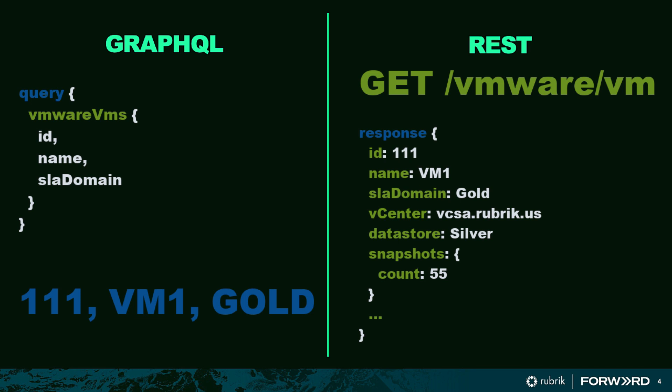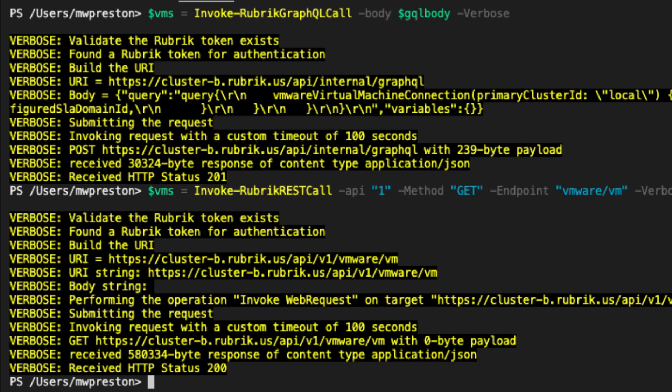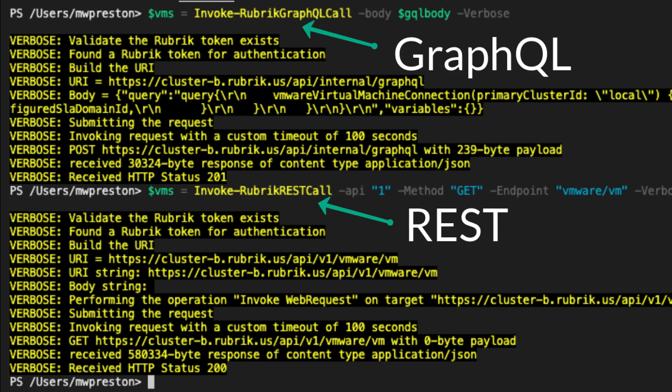This concept is called overfetching. In fact, let's look at the actual differences in payload. There are a couple of different queries here — the first being our GraphQL query and the second being our REST query. If we look at the actual response data, our REST response is nearly 20 times the size as our GQL response.